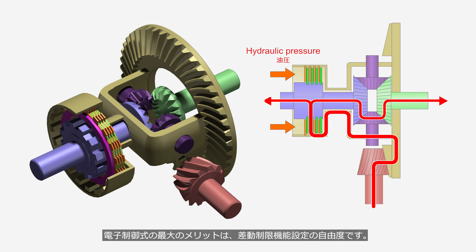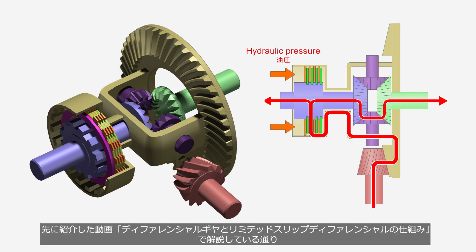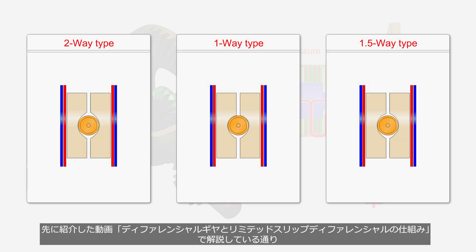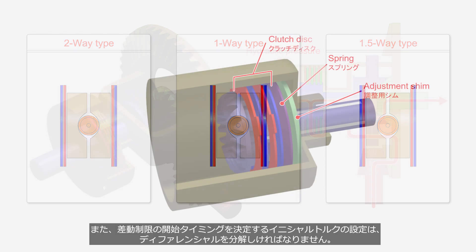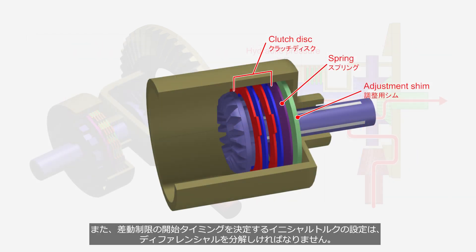The biggest advantage of electronic control is the flexibility in setting the differential limiting action. As explained in the previously introduced video 'Limited Slip Differential: How It Works,' mechanical differentials come in three types: one-way, which limits differential action only during acceleration; two-way, which does so during both acceleration and deceleration; and 1.5-way, which is a balance between the two. Additionally, setting the initial torque, which determines the timing for differential limiting to begin, requires disassembling the differential.